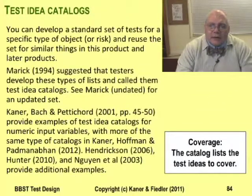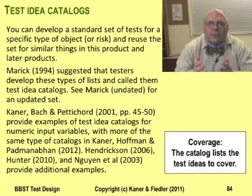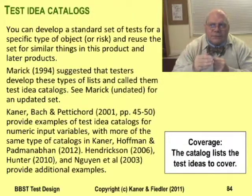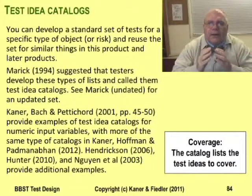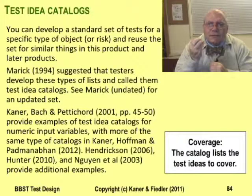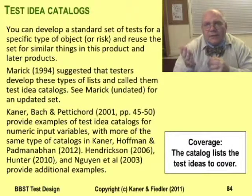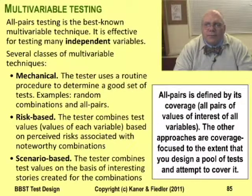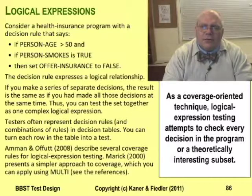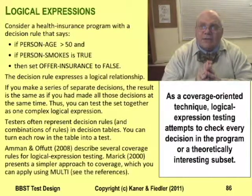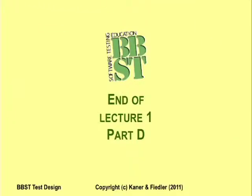I learned to use test idea catalogs from Brian Merrick. Testers often test the same kinds of things in program after program. If you put your ideas for testing that kind of thing into a list, you can organize your future testing with that list and train other testers with it. A test idea catalog is really a list of ideas about how programs can fail and how to look for those failures, so I usually think of these catalogs as a basis for risk-based testing. But if you measure your testing progress by counting the percentage of test ideas you've covered from one of these lists, that's coverage-based testing. Some types of multi-variable testing are designed around coverage — for example, all-pairs testing, which we'll study in lecture six. When a program chooses to do one thing instead of another, the code underlying that choice is a logical expression. Many decisions are complex — the product of several choices. Logical expression testing is about testing those choices, especially those combinations of several choices, and about how to decide how many tests is enough.